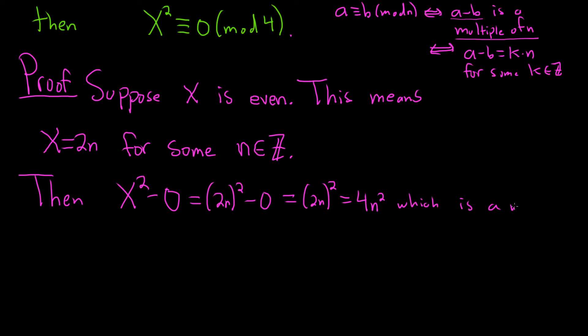This is a multiple of 4 since it's 4 times an integer. Since n squared is actually an integer because n is an integer, we have 4 times an integer. So x squared minus 0 is 4 times an integer.